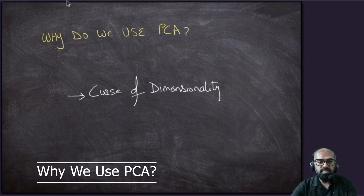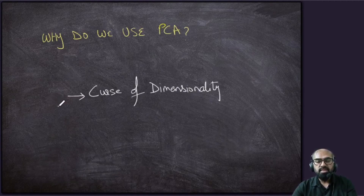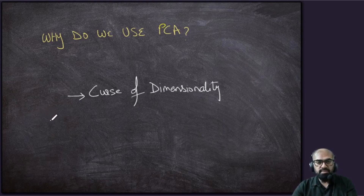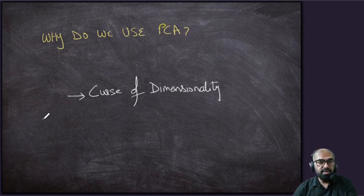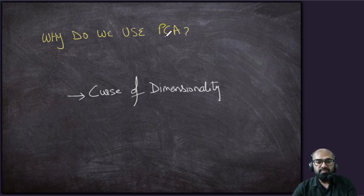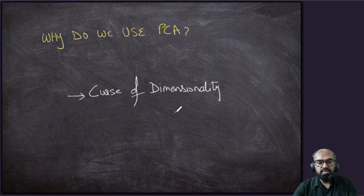So why do we use PCA? We discussed in one of the lectures regarding the curse of dimensionality. Having too many dimensions may make our machine learning model complex, which might not be desirable. Too many dimensions can also compromise the model's efficiency or performance. That's the reason we end up using PCA — it is basically a dimension reduction technique to cope with the curse of dimensionality.